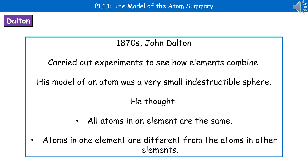The first scientist — we need to go back to the 1870s where we encountered John Dalton. He carried out a series of experiments to see how elements combine. As a result, he came up with his model of the atom: that atoms are very small, indestructible spheres. He also thought that all atoms in an element are the same, and that atoms in one element are different from atoms in other elements.